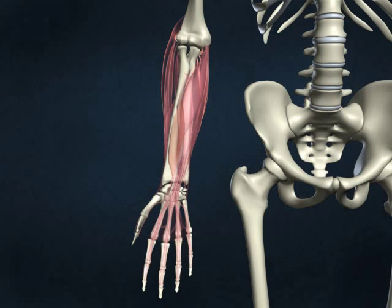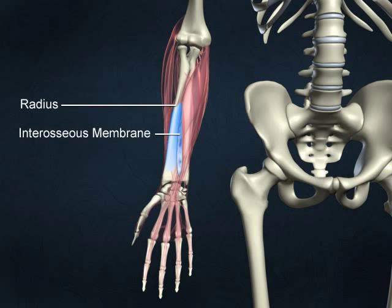The flexor pollicis longus originates on the anterior surface of the radius and the interosseous membrane. The interosseous membrane is a sheet of fibrous tissue that holds the shafts of the ulna and the radius together. The insertion is on the distal phalanx of the thumb.